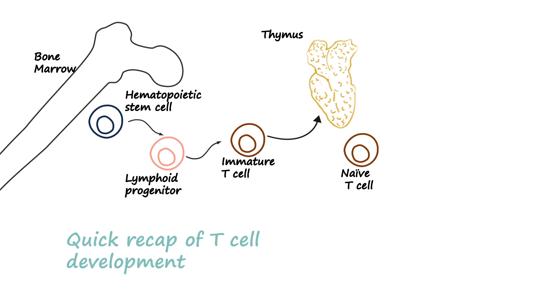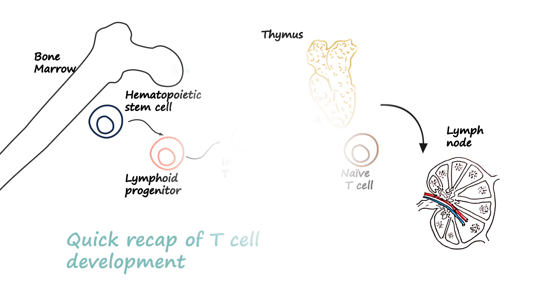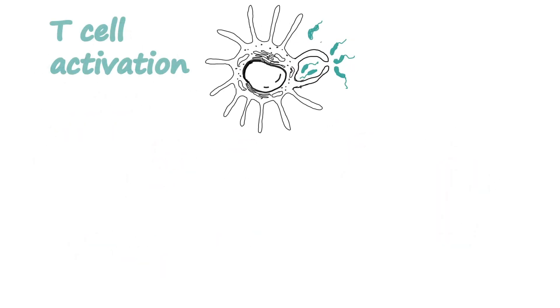From the thymus, naive T cells go to the lymph node, and this is where the action begins. All the events of T cell activation are actually happening in the lymph node. Now let's talk about T cell activation.